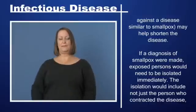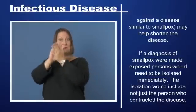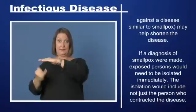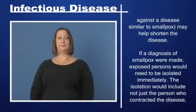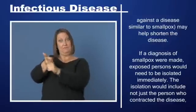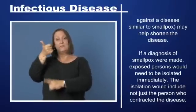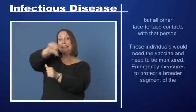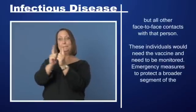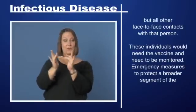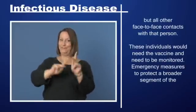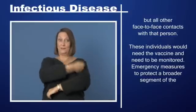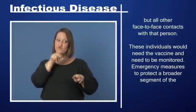Vaccinia immune globulin — antibodies against a disease similar to smallpox — may help shorten the disease. If a diagnosis of smallpox were made, exposed persons would need to be isolated immediately. The isolation would include not just the person who contracted the disease, but all other face-to-face contacts with that person. These individuals would need the vaccine and need to be monitored.